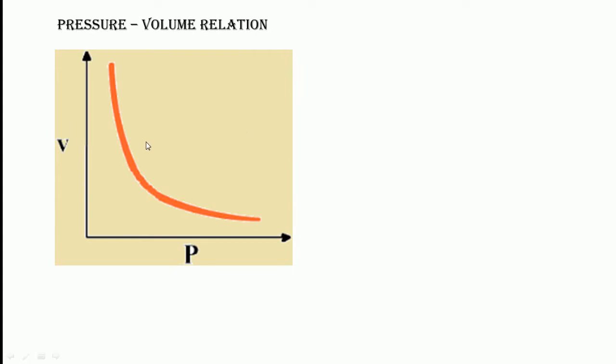This can be graphically represented with volume taken as the x-axis and pressure as the y-axis. When volume decreases, the pressure of the system goes up. Mathematically, pressure is proportional to 1 over V.